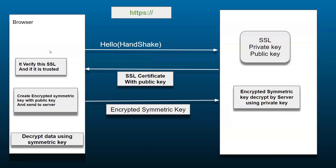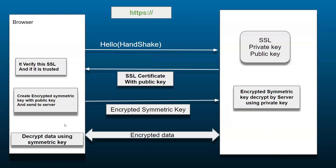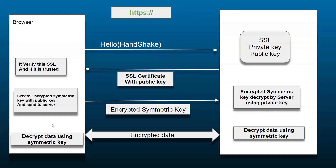Now data transfer begins. The browser encrypts the outgoing data using the symmetric key and sends it to the server. The server, which has the same symmetric key, uses it to decrypt that data. Similarly, when the server wants to send data back, it encrypts it with the same symmetric key and sends it to the browser, which can also decrypt it easily.